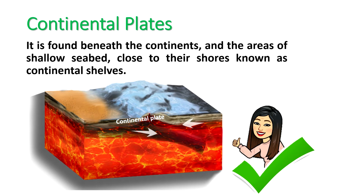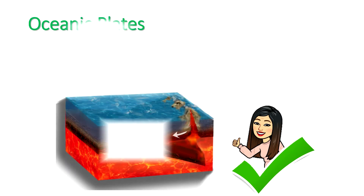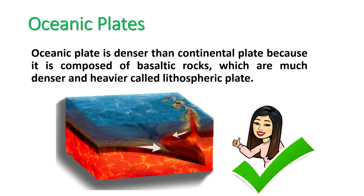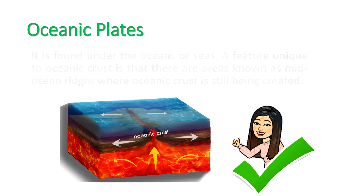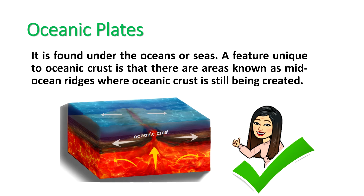The continental plate is found beneath the continents and the areas of shallow seabed close to their shores, known as continental shelves. Oceanic plate is denser than continental plate because it is composed of basaltic rocks, which are much denser and heavier. It is found under the oceans or seas. A feature unique to oceanic crust is that there are areas known as mid-ocean ridges, where oceanic crust is still being created.